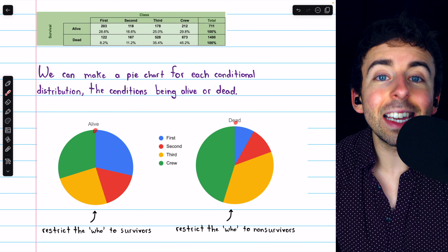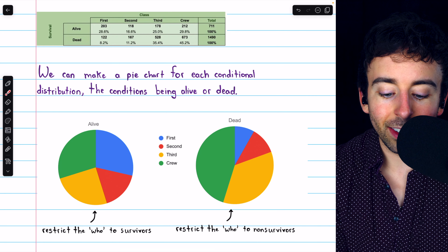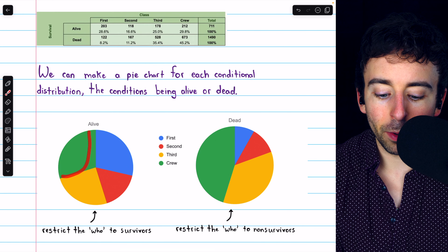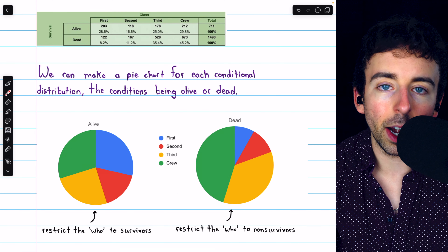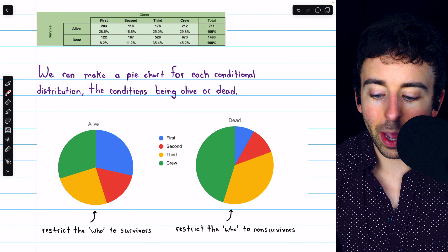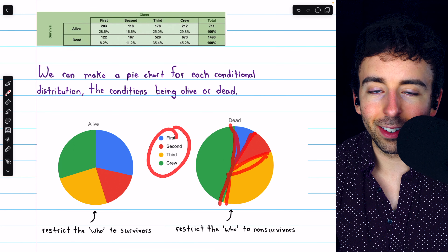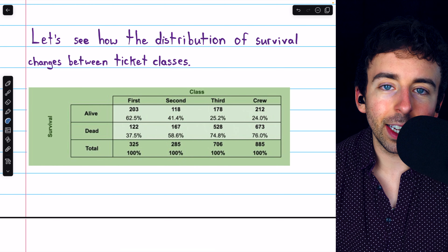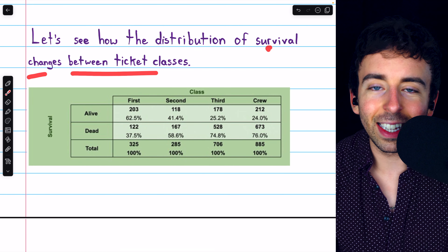We can actually make a pie chart for each conditional distribution. Given the condition that someone survived, that only consists of the alive people. So we can make one whole pie chart for 100% of the alive people, separated into the ticket classes and the portions of the survivors that those ticket classes made up. Similarly, if it's given that someone did not survive, they make up 100% of that pie, split proportionally into the ticket classes among those who did not survive.